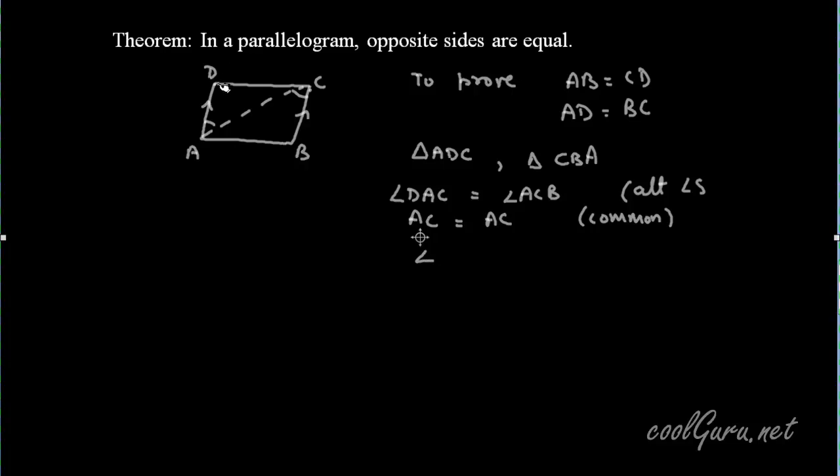And also angle DCA is equal to angle CAB. These are also a pair of alternate angles for these two lines. DC is also parallel to AB. So by ASA criteria, triangle ADC is congruent to triangle CBA.